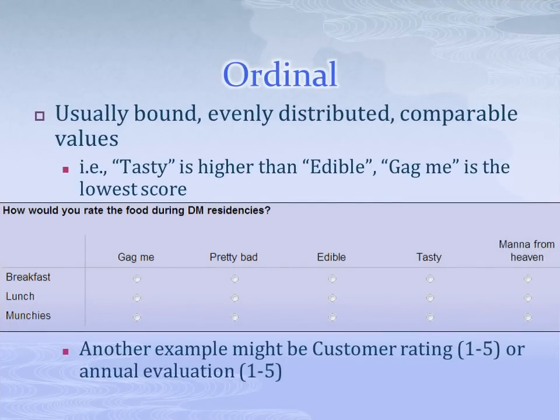Ordinal variables capture data using a spectrum of values, usually ordered from low to high, and these values are often spaced at even intervals. For example, 'pretty bad' is one value higher than 'gag me.' These variables also have some intrinsic value, so someone responding with 'tasty' is indicating that they feel the food at the DM residency is more delicious than someone who responds with 'edible.' Thus, the values on the spectrum are meaningful levels of the concept about which we desire data.